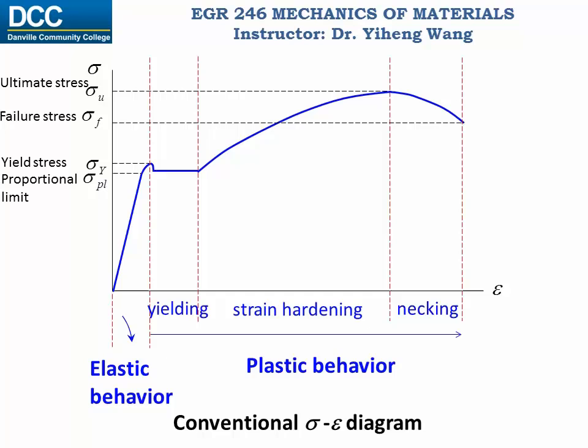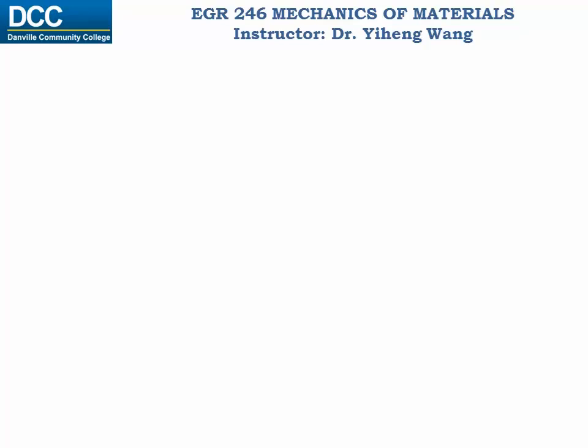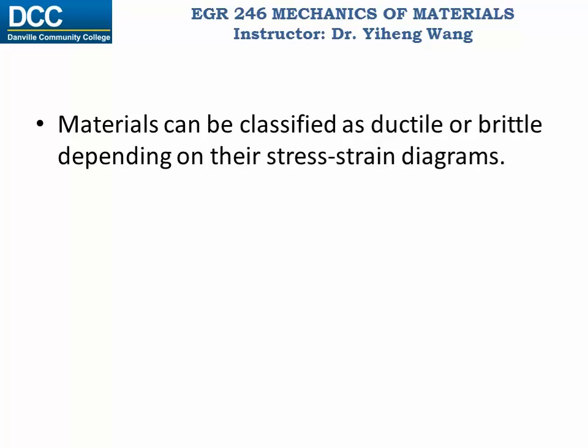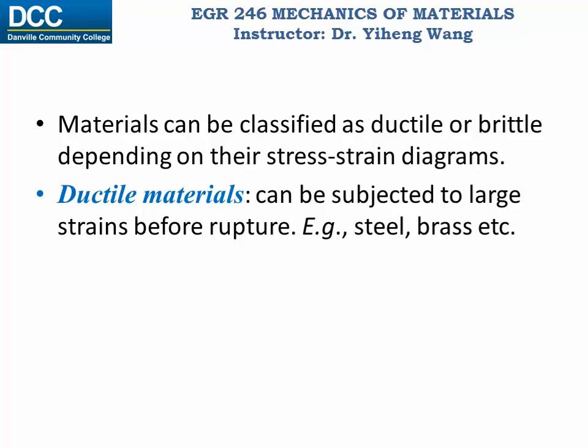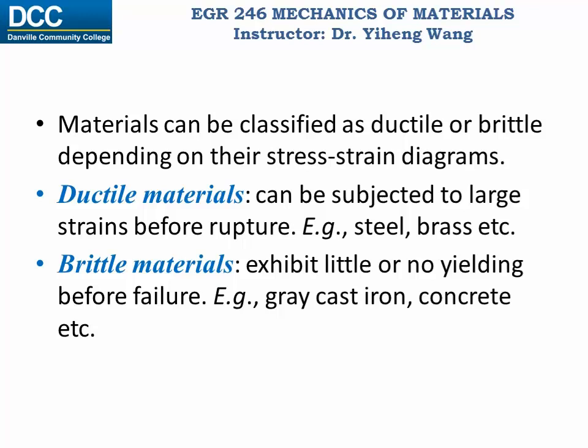Based on the stress-strain diagrams of different materials, a simple classification is ductile material and brittle material. In general, ductile materials can be subjected to large strains before rupture — they can exhibit large deformation before failing — and they normally show higher resistance to tensile stress than compressive stress. Brittle materials, on the other hand, exhibit little or no yielding, meaning no deformation before failure, and they normally show high resistance to compressive stress rather than tensile stress.